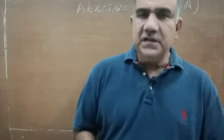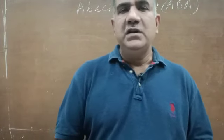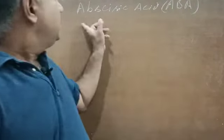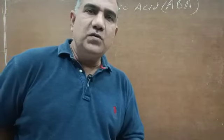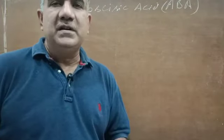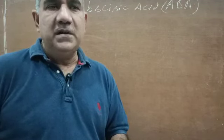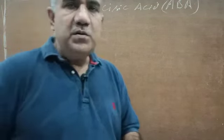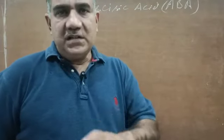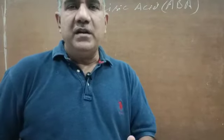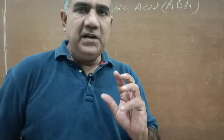In this class we are going to study yet another plant hormone called abscisic acid, or ABA. This is also called a growth inhibitor because it retards the growth of plant parts. It is also called stress hormone or dormin because it induces dormancy.